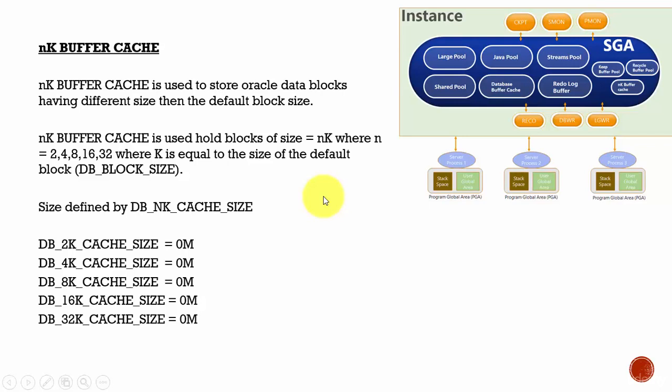In this session, let's learn about NK Buffer Cache. We know the default block size in Oracle 11G is 8192 bytes.